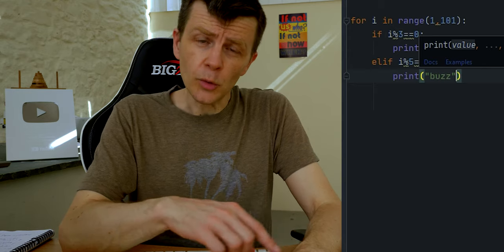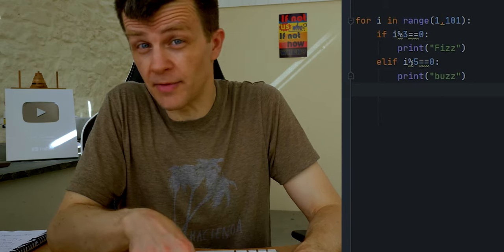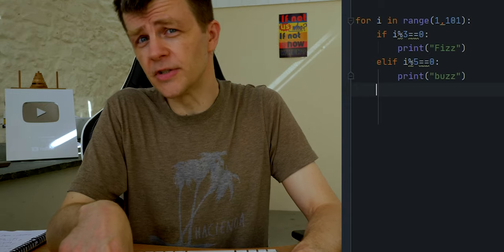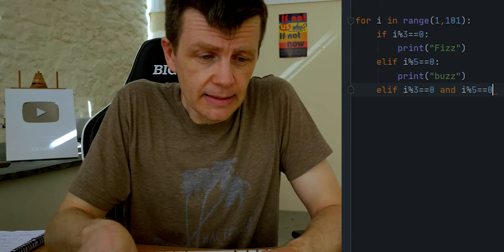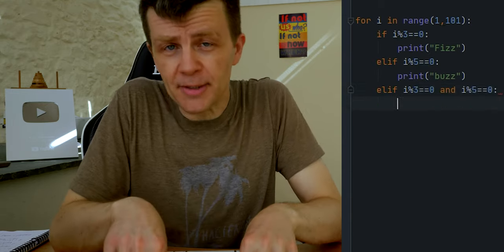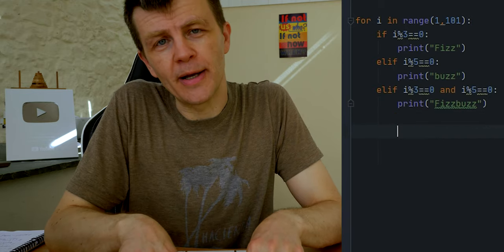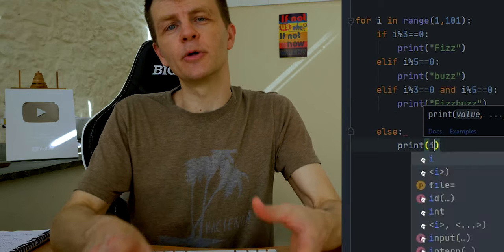We'll now do the same thing with five. If it's a multiple of five, if i modulo five equals zero, then we'll print buzz. And then if the number we're on is a multiple of three and a multiple of five, well we'll just print fizz buzz. And then if it's none of those things we'll print the number.